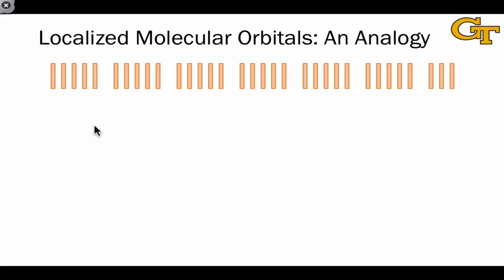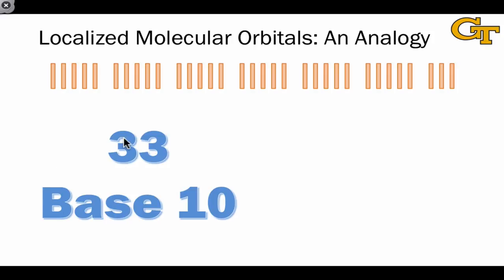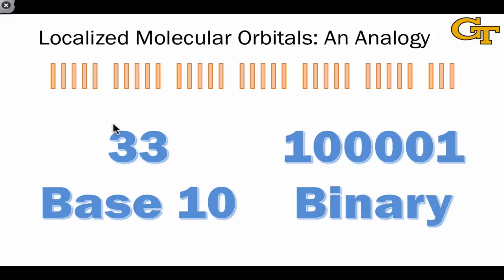Before launching into natural bond orbital theory and localized molecular orbitals, I want to give an analogy to help you understand the difference between the molecular orbital theory you've seen before and the localized MO approach. So what I've done on this slide is just laid down some sticks here, and there are 33 sticks on this slide. There are multiple ways to represent this quantity of 33. We could simply write the number 33 in base 10, which contains a 3 in the tens place and another 3 in the ones place. But there's another way to write this quantity in a different numbering system as 1, 0, 0, 0, 0, 1. These two numbers are equivalent in the sense that they represent the same quantity.